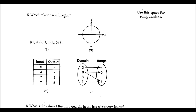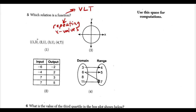For question five, we want to know which relation is a function. Two things to use: the vertical line test, and looking for repeating x values. Repeating x values is bad — a relation with repeating x values is not a function. Looking at choice one, we have x equals one, two, three, four — none of the x values repeat, so choice one is looking good.